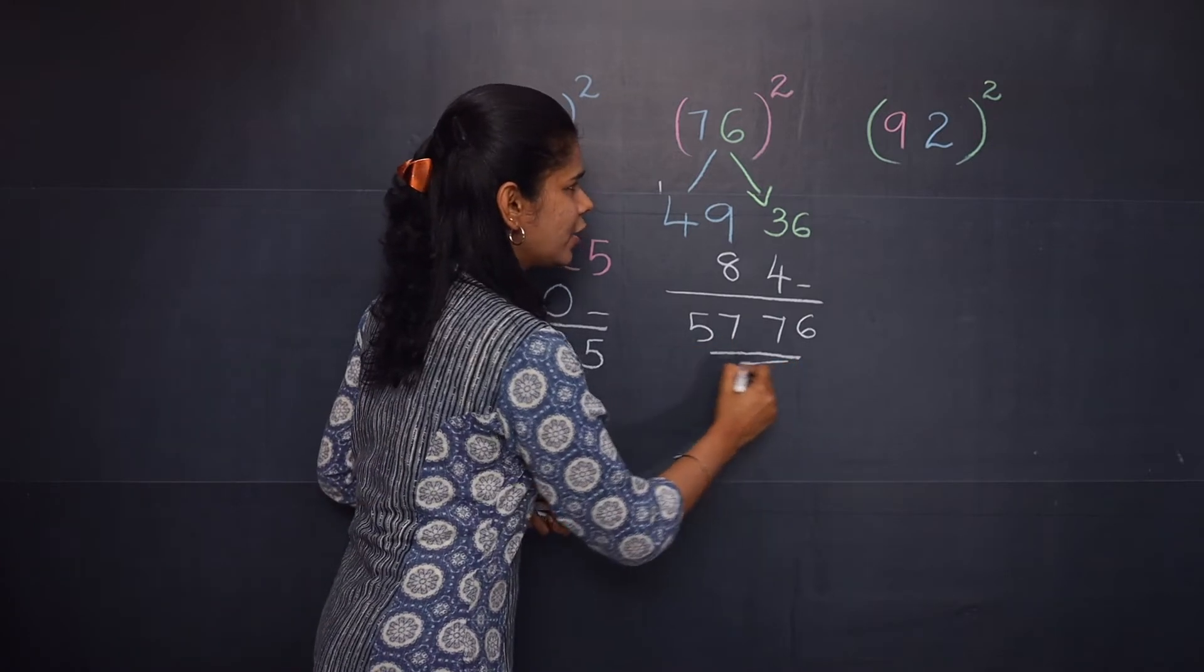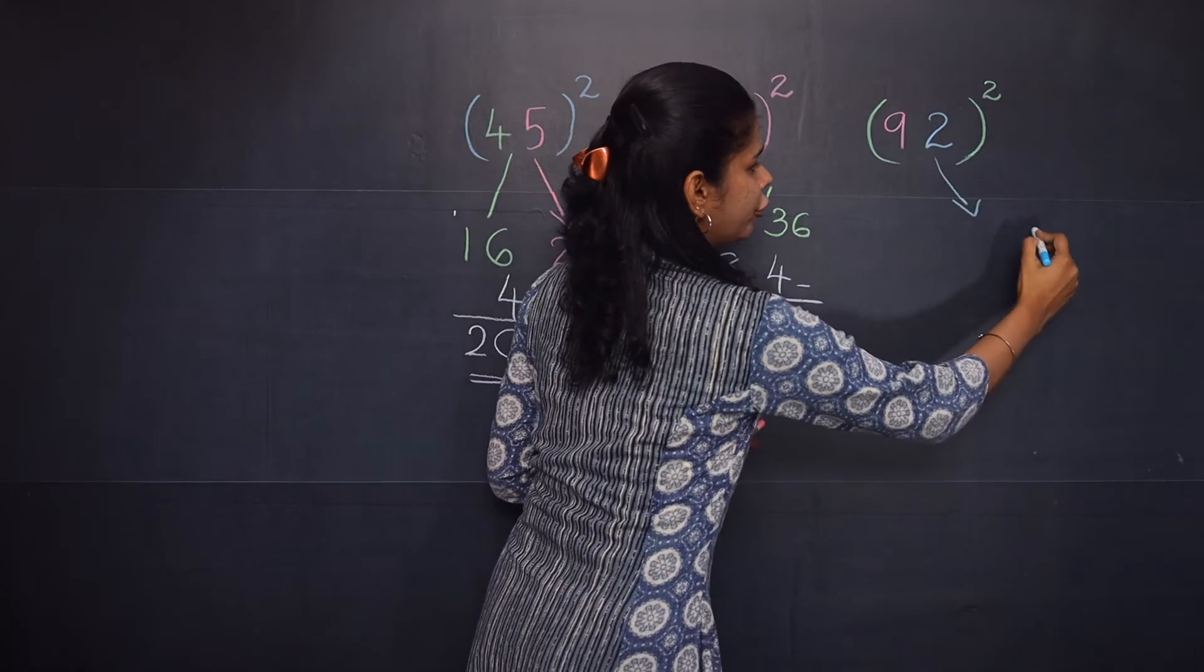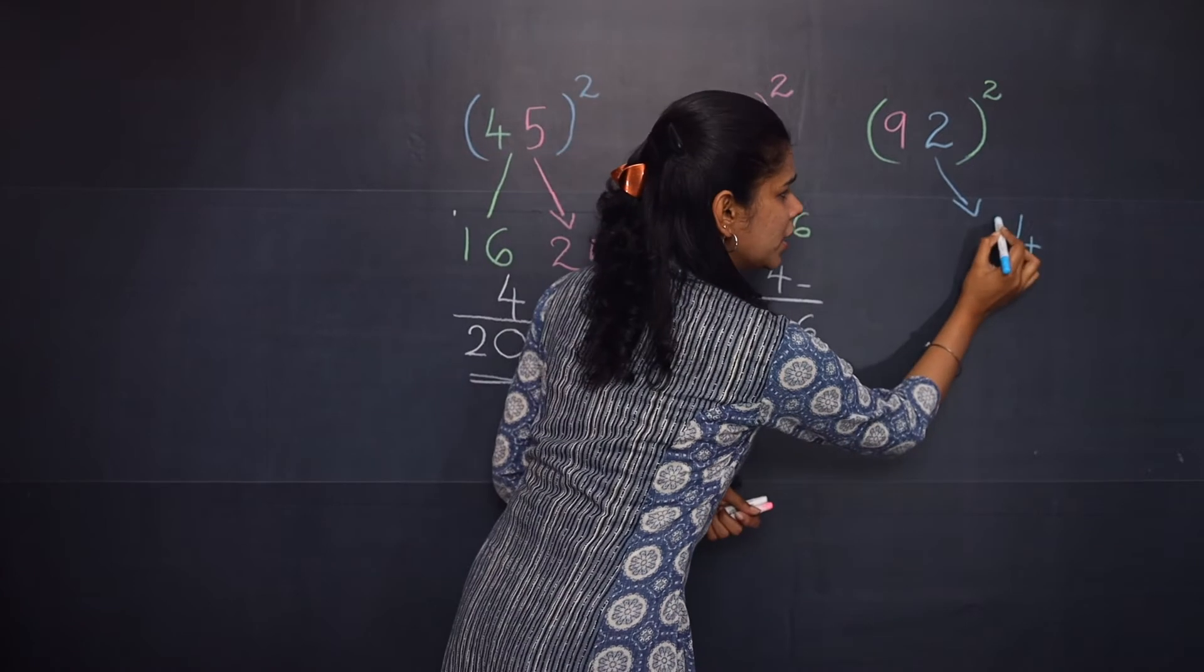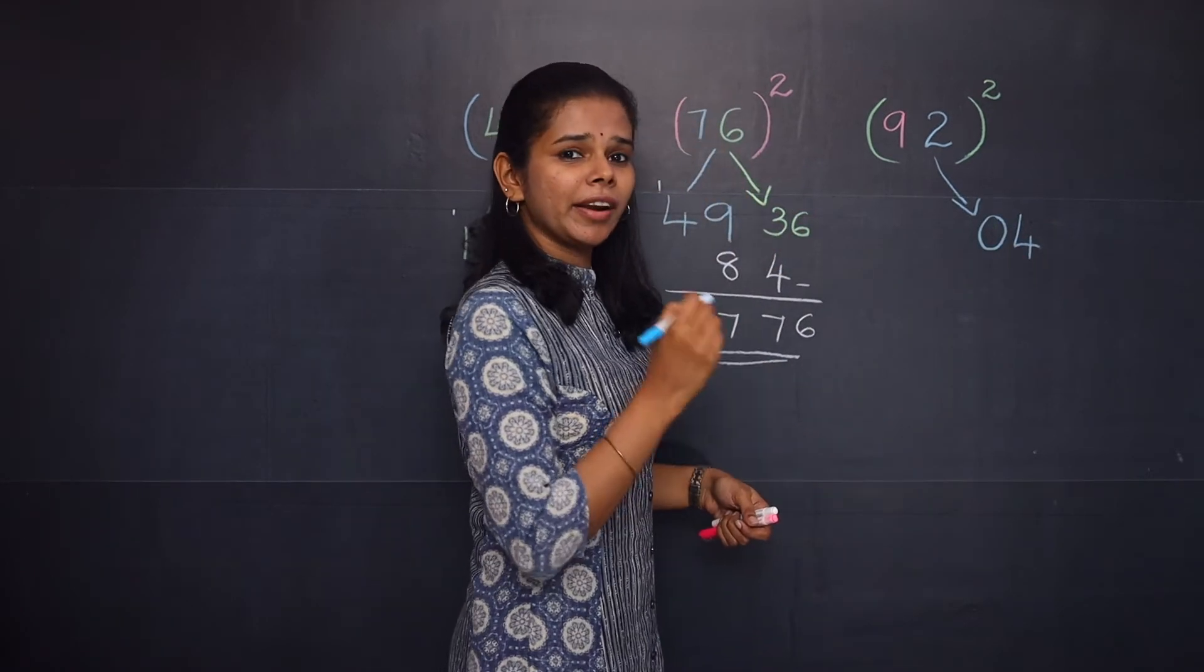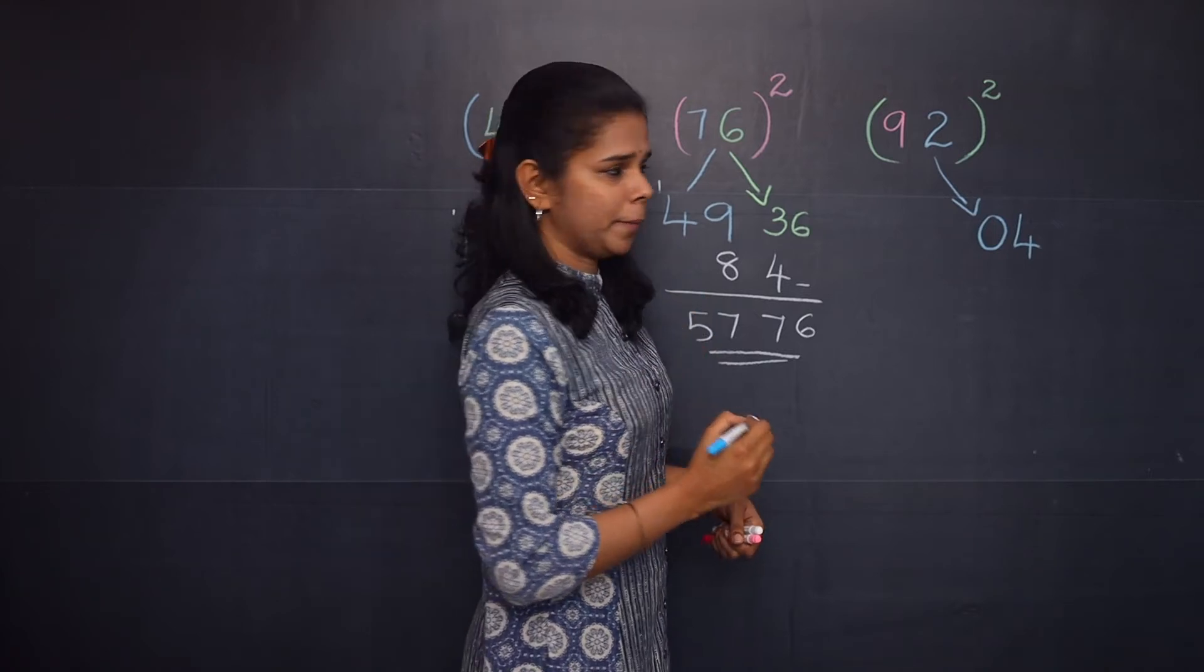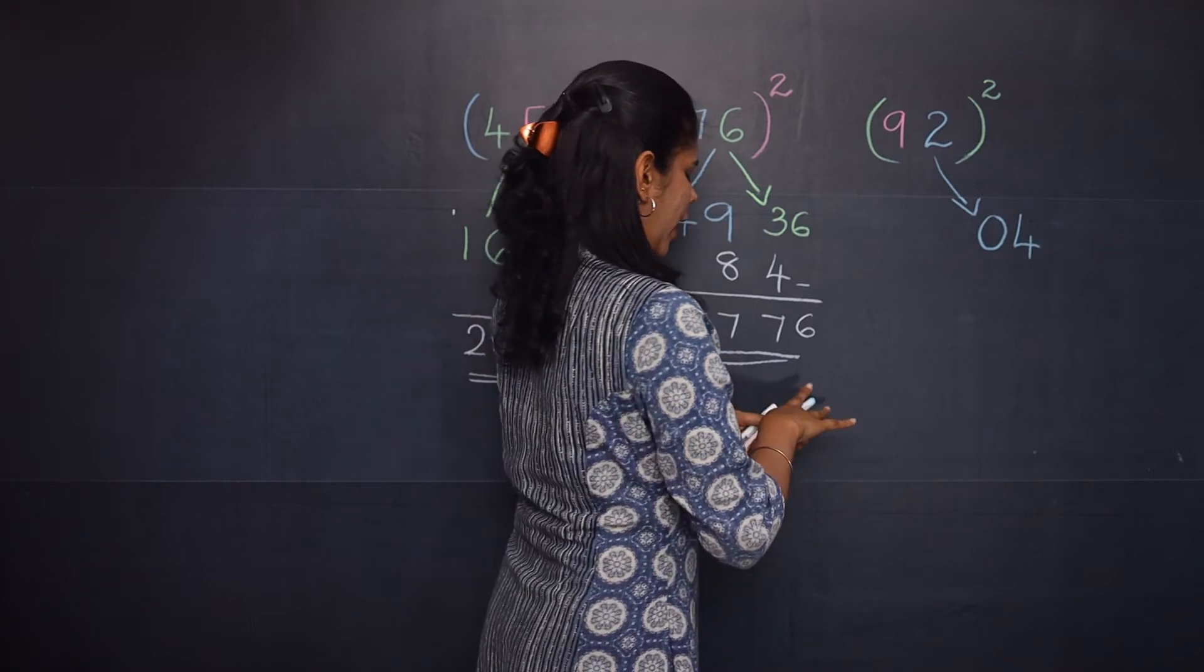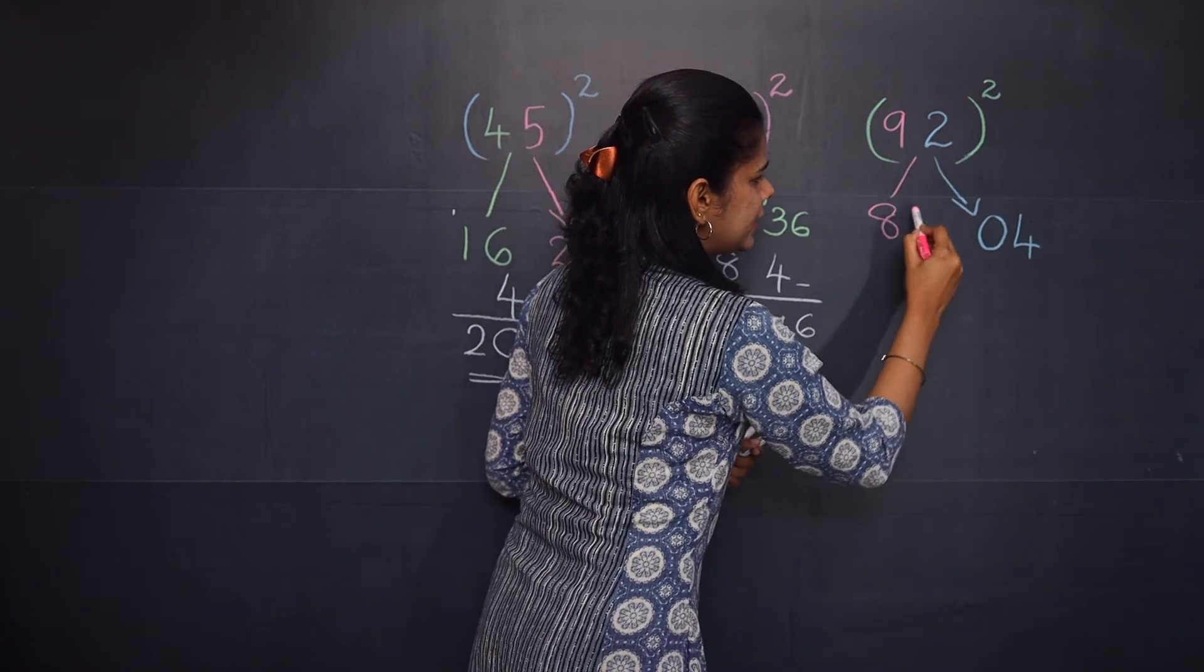So 2 square is 4, but here you need to remember to put a 0 in the tens place because we will write it as a 2-digit number. So 2 square you can write it as 04, and then 9 square is 81.